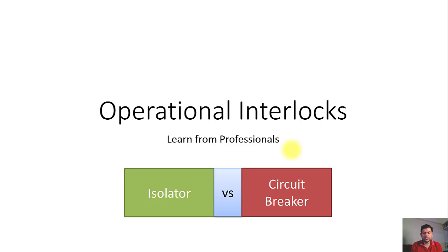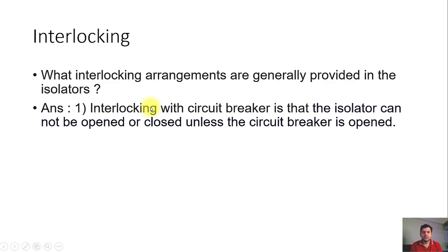That arcing created transient voltages, which means that in substations we need to take care of the sequence of operations of different equipment. In substations we have major controlling elements: the circuit breaker, isolator, and earth switches. These are the major components involved in controlling and switching circuits, so we need to follow a certain sequence or create interlocking arrangements to ensure operations take place in the correct order.